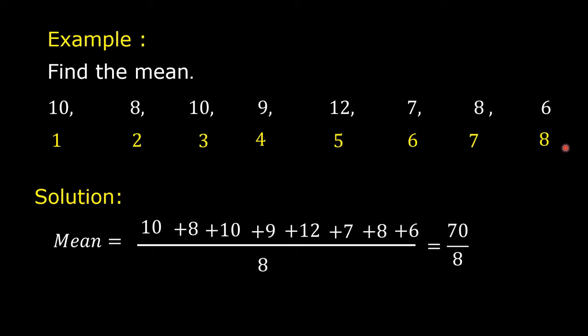So 70 divided by 8 is equal to 8.75. Therefore, the mean is equal to 8.75.